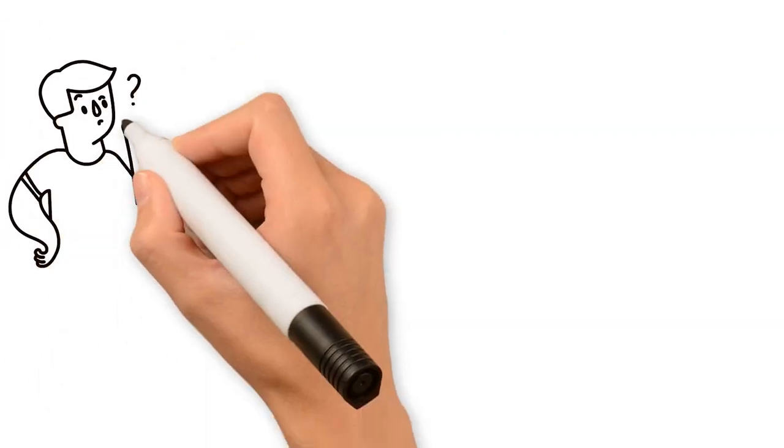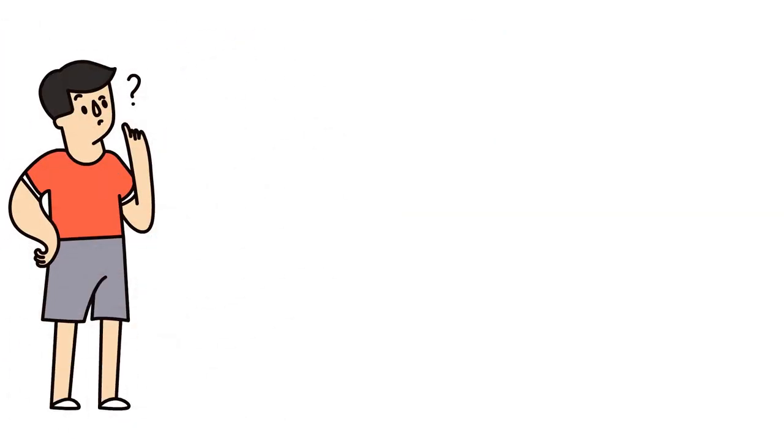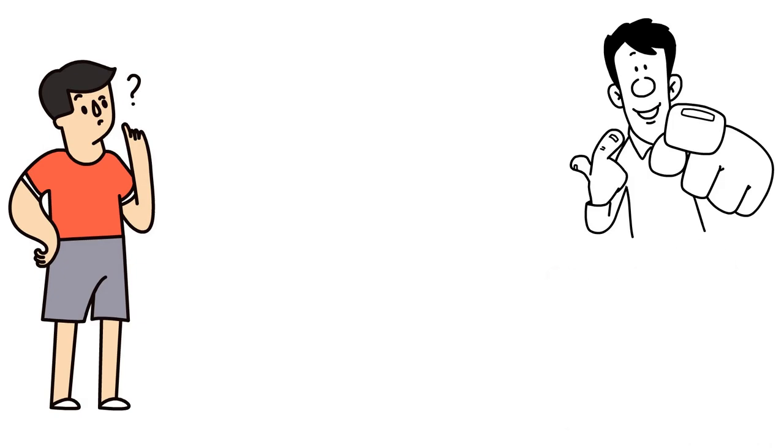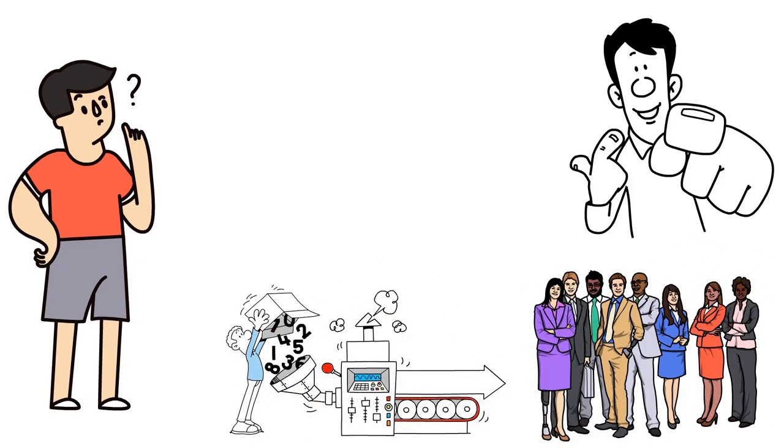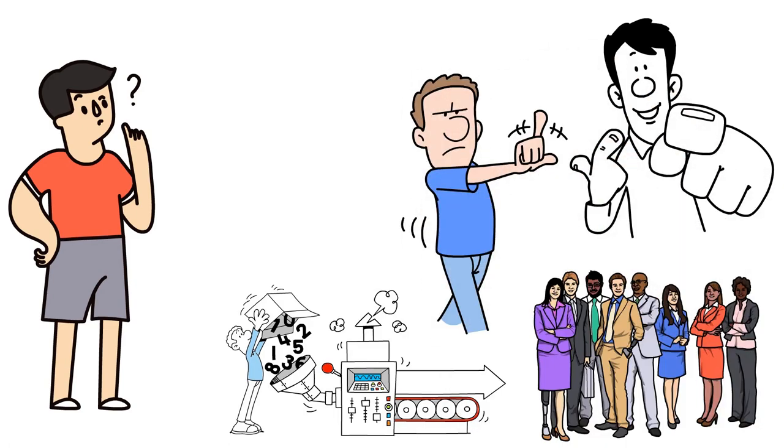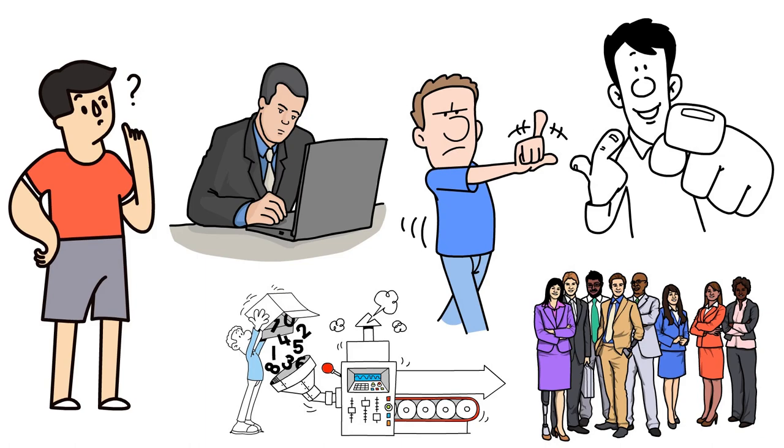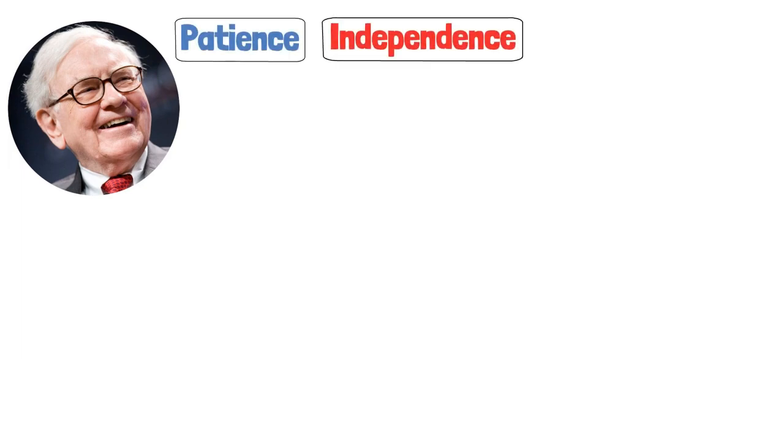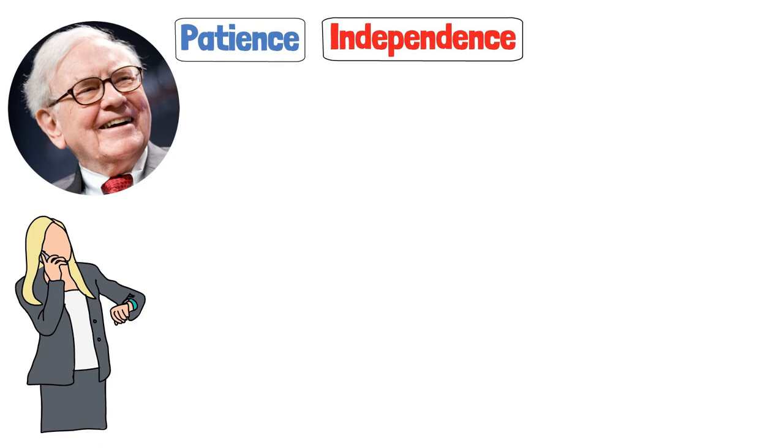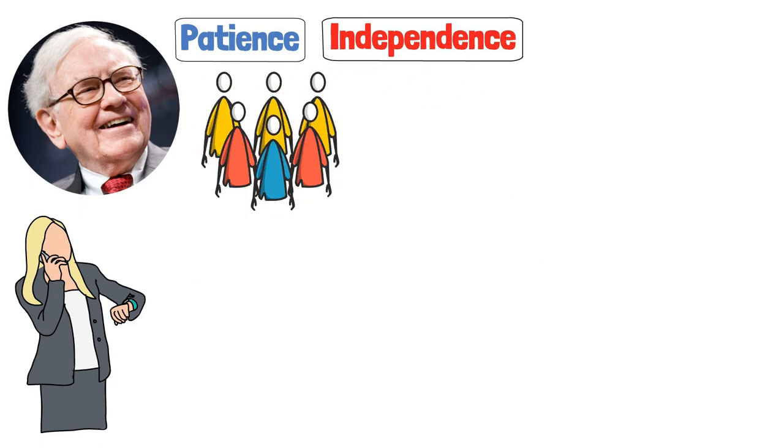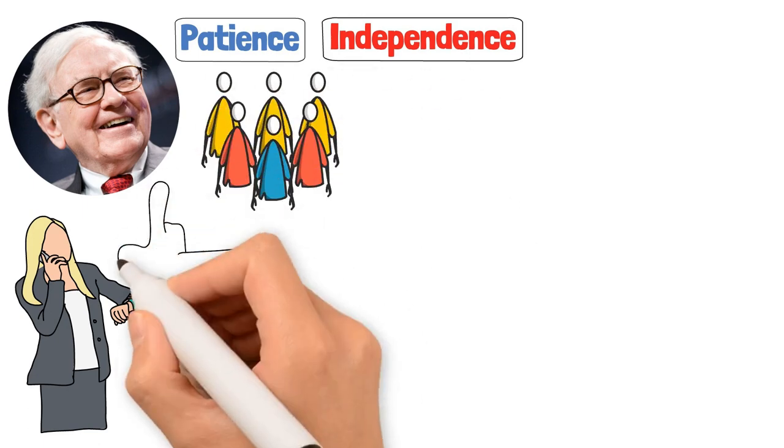But why is it so hard to go against the herd? Well, it's all about wiring. We're social creatures. We feel safe in numbers. It's a survival instinct. But the stock market is not the savanna, and you're not a gazelle. You're an investor and investors need to think differently. To invest like Buffett, you need to cultivate two things, patience and independence. Patience to wait for the right opportunity and independence to move when others won't. It's not easy, but it's essential.